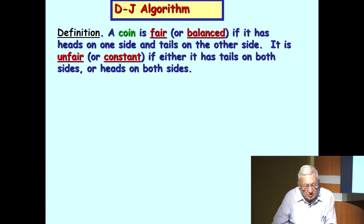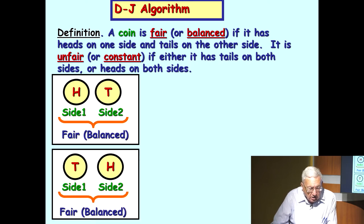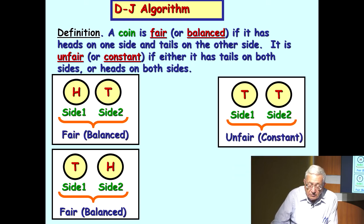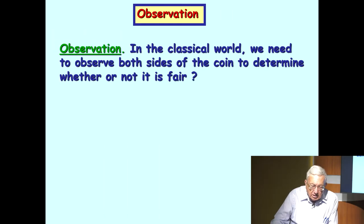So here we have a fair coin. It's heads on one side and tails on another side. Or if you like another one, it's heads on side one and tails on side one and heads on side two. Here is one unfair coin, tails on both sides, another unfair coin, heads on both sides. Observation. In the classical world, we need to observe both sides of the coin to determine whether or not it's fair. So when I hand you a coin, you have to turn it over to find out whether or not it's a fair coin. Obvious fact. However, this isn't exactly true in the quantum world. We can make one single observation to decide if the coin is fair or not.